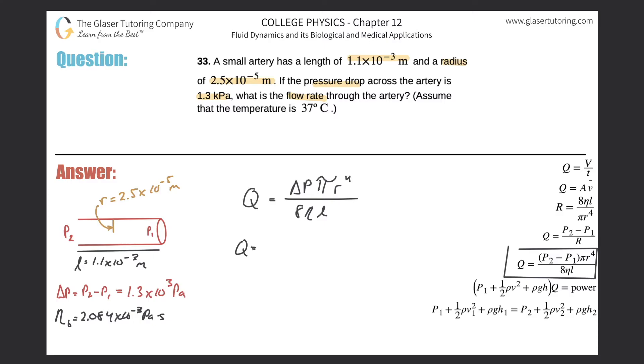This is just a simple plug-in. We have 1.3×10³ times π times the radius of 2.5×10⁻⁵ raised to the fourth, all divided by 8 times the viscosity of 2.084×10⁻³. Just be careful when you look up this value—usually it's in millipascals, but you need it in pascals. Then multiply by the length, 1.1×10⁻³ meters. Now we just need to plug it all in.